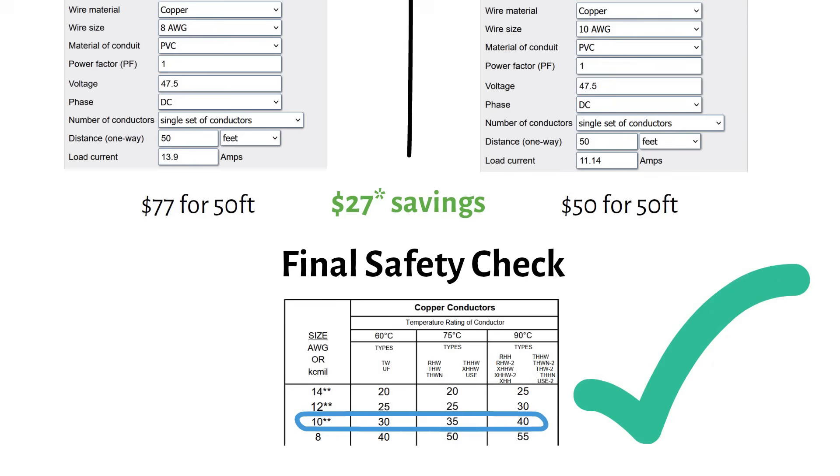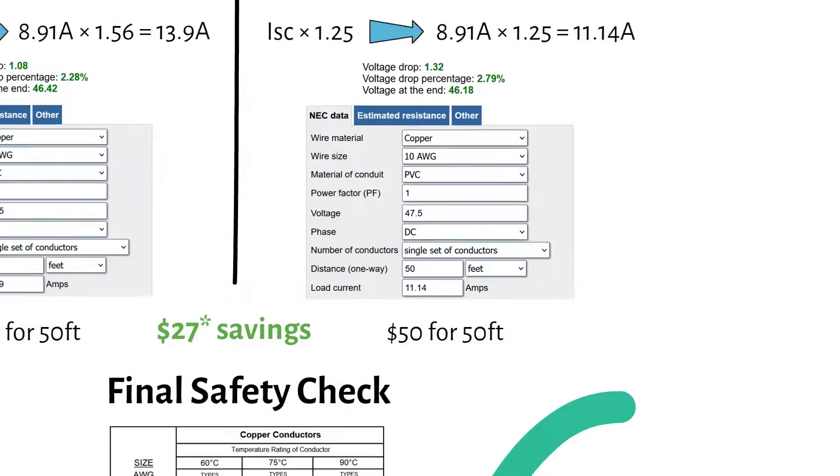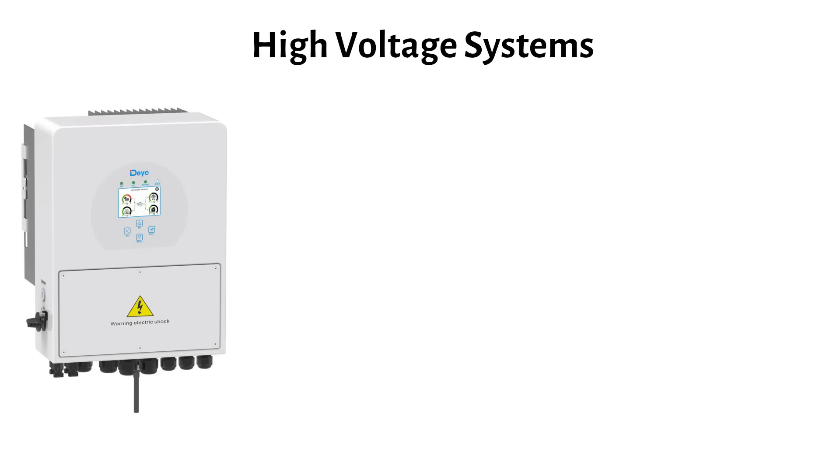Why do we have to do this safety check? Let me explain with another example. In higher voltage systems, for example a commercial string at 450 volts DC, the voltage drop will often be very small and the calculator might suggest a surprisingly small wire diameter.